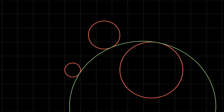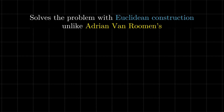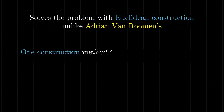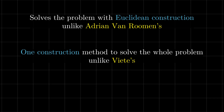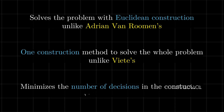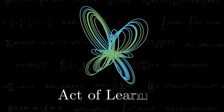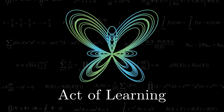The beauty of Gigan's solution is multifold. Firstly, it solves the problem using Euclidean construction, unlike Adrian van Roemen who solved it using intersecting hyperbolas. Secondly, it solves the generic problem with just a single method, unlike van Roemen who split the problem into 10 cases. Finally, much of its elegance comes from minimizing the number of decisions, unlike Newton's solution which needs multiple decisions along the way. Amidst all this, it's still a nice challenge to correctly draw all the solution circles for a given configuration, and I thoroughly enjoyed the journey. Hope you liked the discussion as well — see you in the next video.